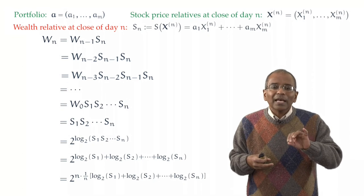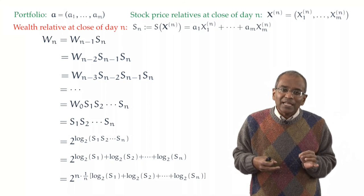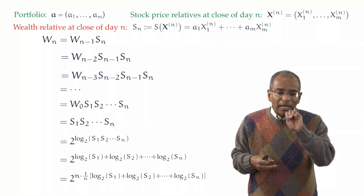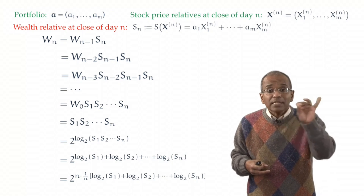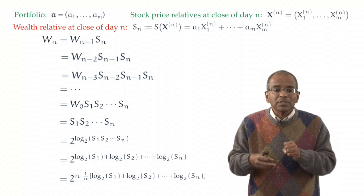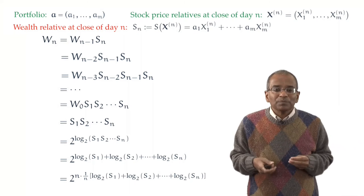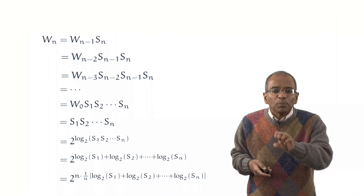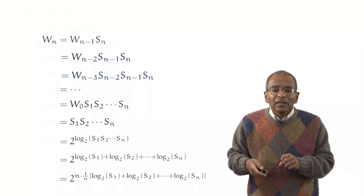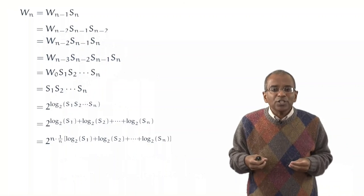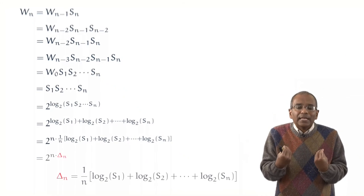The wealth at the end of day n's trading is given by a power of 2. And in the exponent I get n times an arithmetic average. Let's promptly give it a name. Let's call that arithmetic average delta sub n.